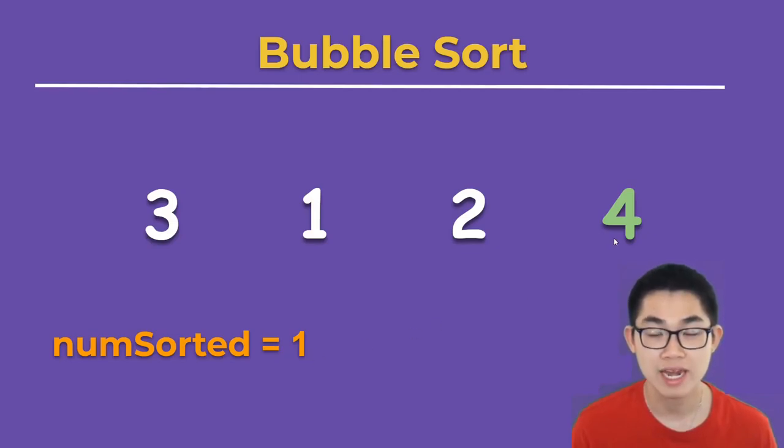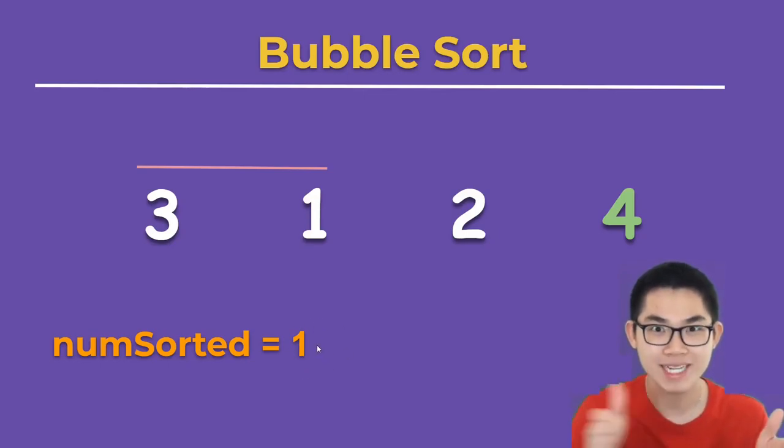So basically, whenever we put a number into its correct place, we increment numSorted. Then we repeat this process. We make the line one size shorter because numSorted is 1, so we make it one size shorter.